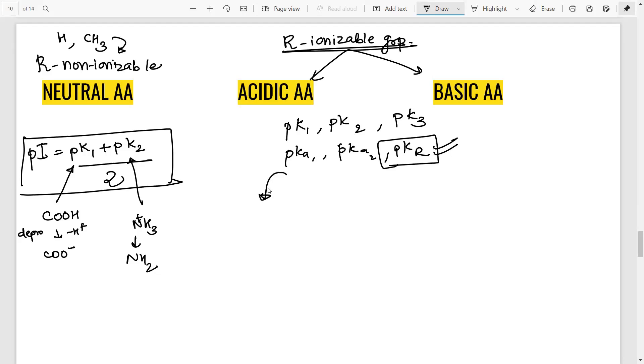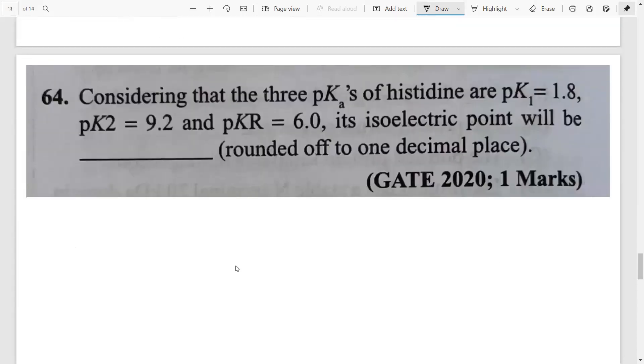So for the acidic amino acids you will take an average of the acidic groups. Whereas for basic amino acids you will take average of the basic groups. So the one that will have the pKR and the other one accordingly you can see from the value and so let's try and understand this with a question.